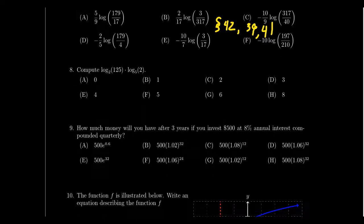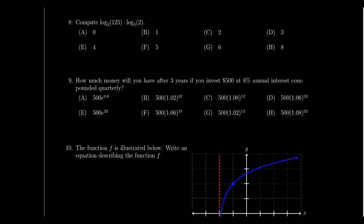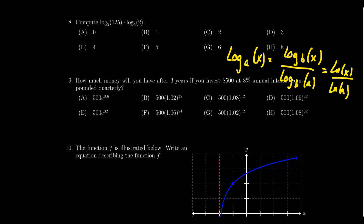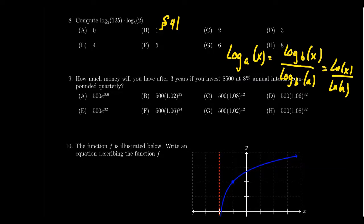Question 8 is about the change of base formula: log_a(x) = log_b(x) / log_b(a), where b can be any base — the natural log or the common log. This formula lets you calculate logarithms with any base. No calculator is necessary; understanding the change of base formula is sufficient. It was introduced in lecture 41 along with the laws of logarithms.